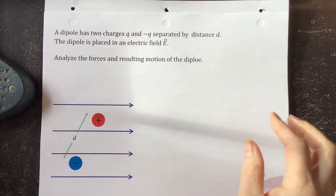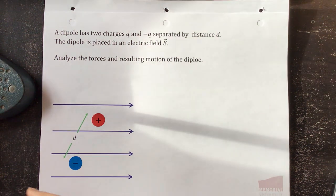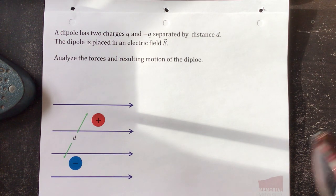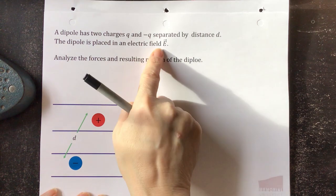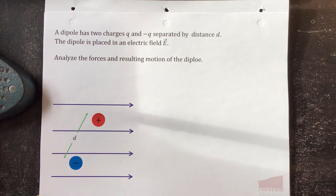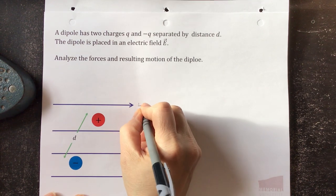So we said our electric dipole had two charges, plus and minus q, separated by a small distance d. Let's ask what happens if we place the electric dipole in an external electric field E. So here's our external electric field. What happens to our electric dipole?